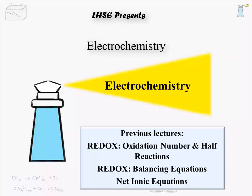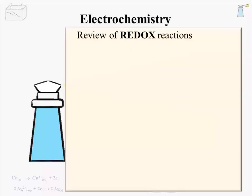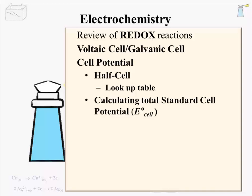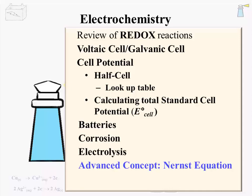To familiarize ourselves with common terminology, a brief review of the redox reaction is offered. Then an introduction to voltaic or galvanic cells that leads to a discussion of cell potential. Within that topic is the half cell, in which energy values can be looked up in a table. Then a look at calculating total standard cell potential. No discussion of electrochemistry would be complete without the battery, corrosion, and electrolysis. For those students who will need it, the advanced concept of the Nernst equation is outlined.